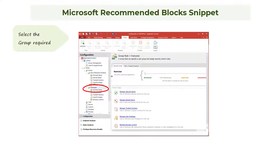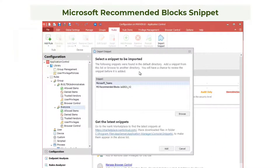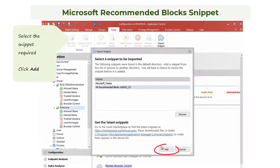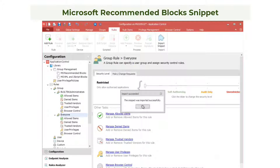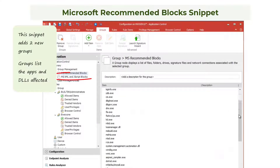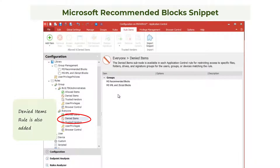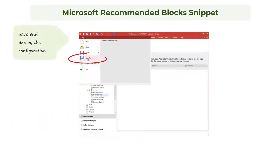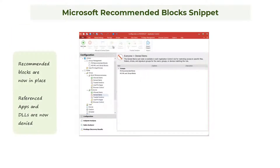To apply the Recommended Block Snippet to everyone, select the Everyone group, then click Import Snippet. The dialog lists any snippets previously downloaded or available. Click Add to import the snippet to your configuration, confirm the import details, and the import completes. This particular snippet automatically creates two new groups: Recommended Block, which lists all the executables, and a group for the DLLs. Because we have added denied items, a new rule has been added referencing these two groups. To activate the snippet, save and deploy the configuration.